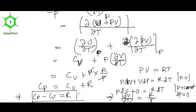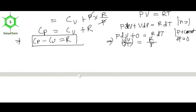From this equation, since R is always positive (8.314 J·mol⁻¹·K⁻¹ or 0.082 L·atm·mol⁻¹·K⁻¹), Cp − Cv is always positive. Therefore Cp > Cv always.